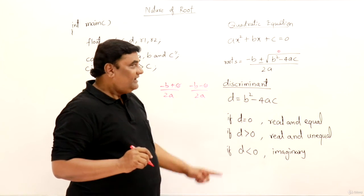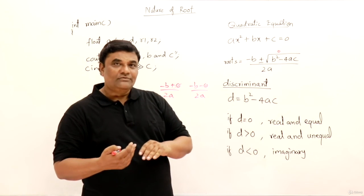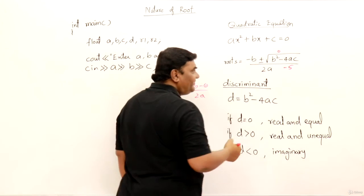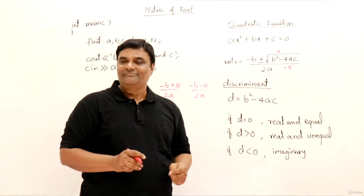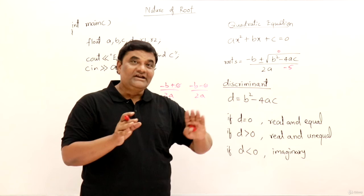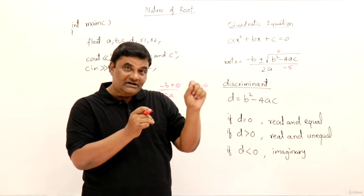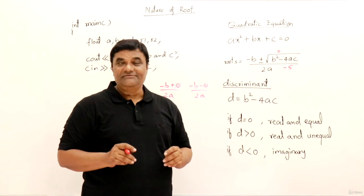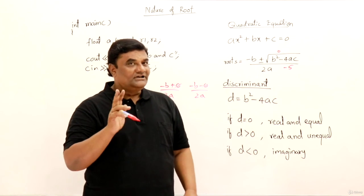Then one more thing. If that b square minus 4ac is less than 0, less than 0 let us say example we got minus 5. Do you know the root of minus 5? No, we cannot find the root of minus 5. So it means we cannot know the roots. Then what do you call if you have under root minus 1? We say the number is imaginary. Imaginary. We don't know the answer, we cannot find the roots.